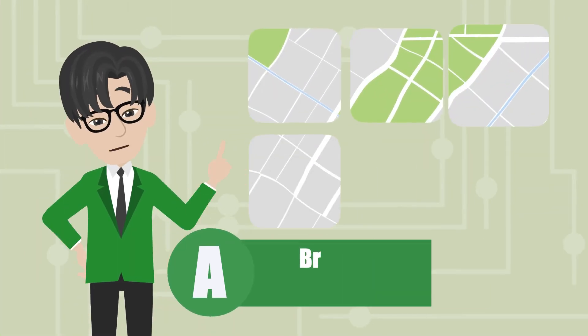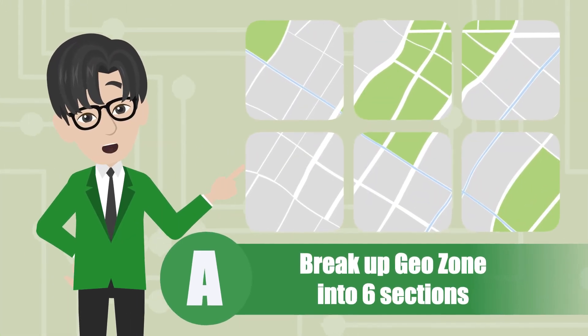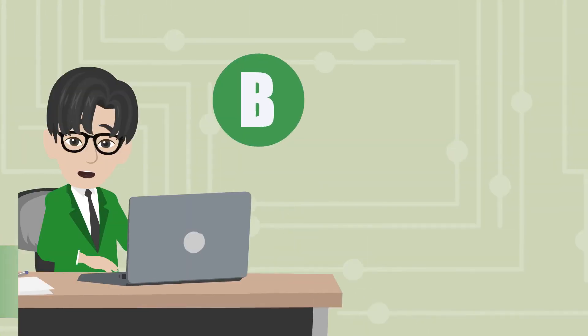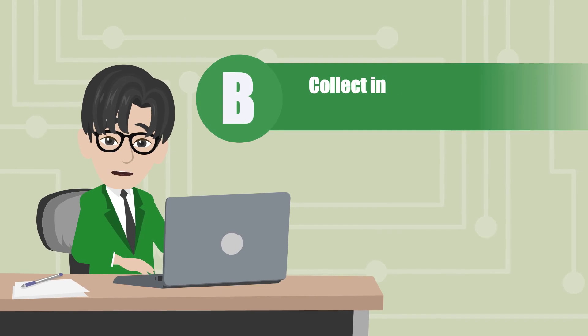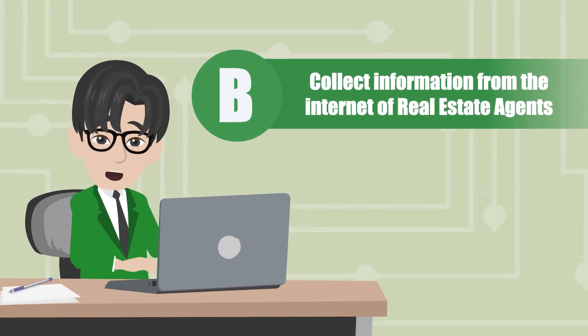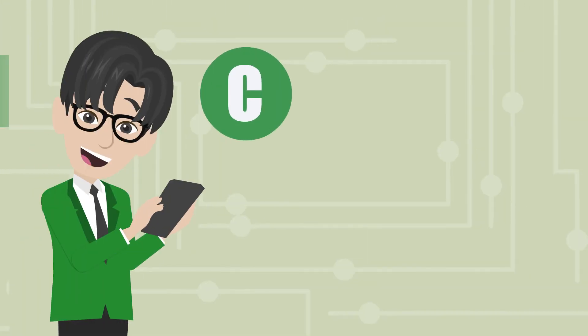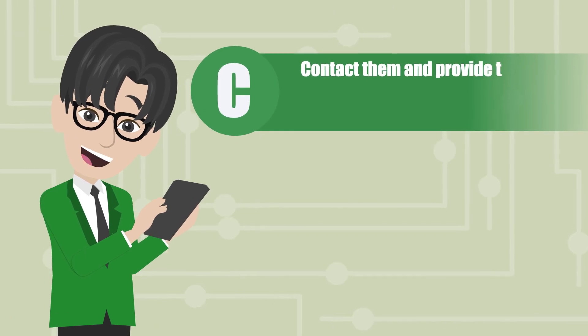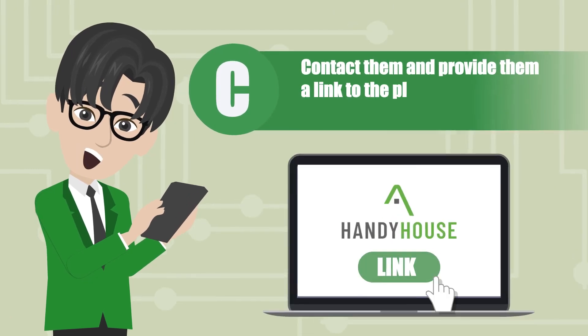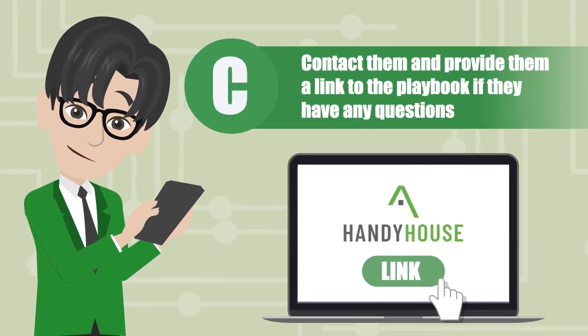Step 2. A: Break up GeoZone into 6 sections. B: Collect information from the internet of real estate agents. C: Contact them and provide them a link to the playbook if they have any questions.